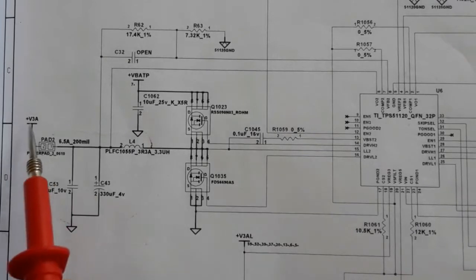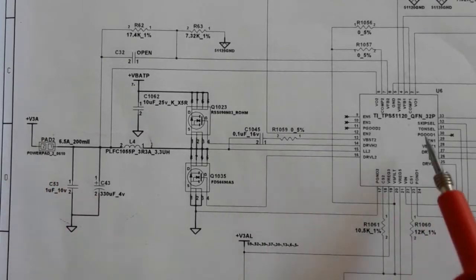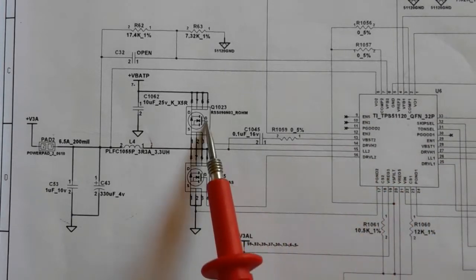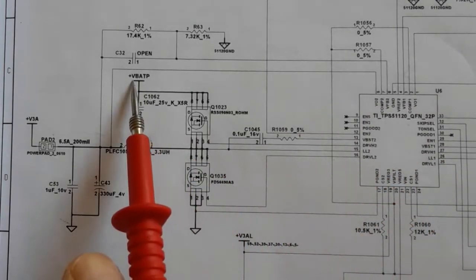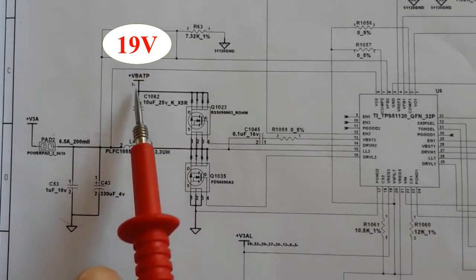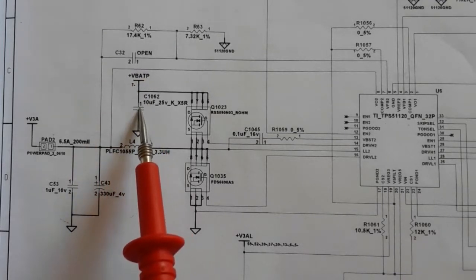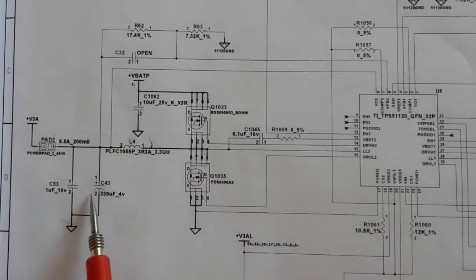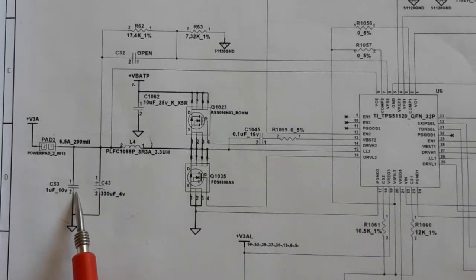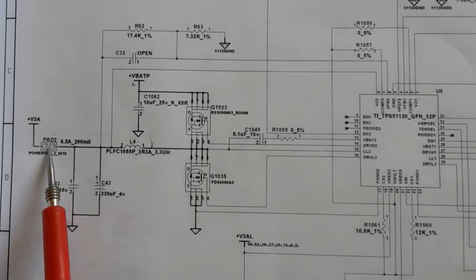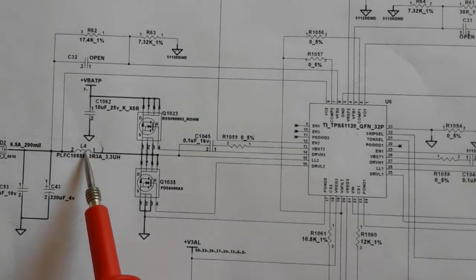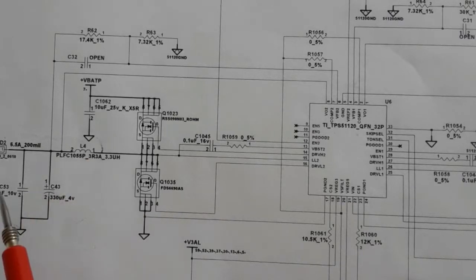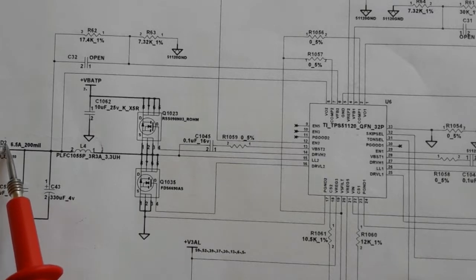Now let's look at the 3V channel in the schematic. We have the IC, the power voltage, the first filtering capacitor, inductor L4, two capacitors (a filtering capacitor to get a pure 3V output), and a test point pad. We'll now identify the inductor and capacitors on the motherboard.